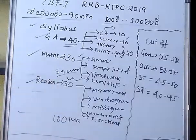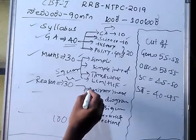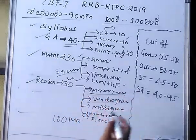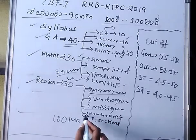For reasoning, we have 30 marks. In railway exams, topics include mirror image, water image, venn diagram, missing number, and number series.